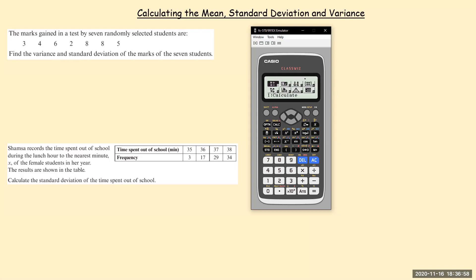I go to menu, I go to number six which is statistics. So number six is statistics and we want one variable, so we're just using our x variable here. You can see it brings up a table.